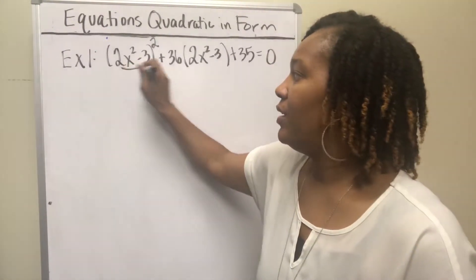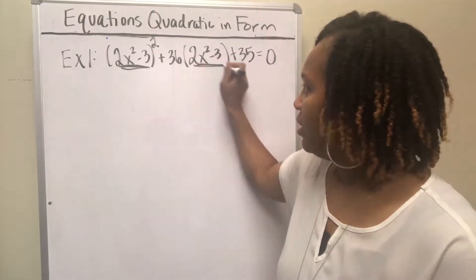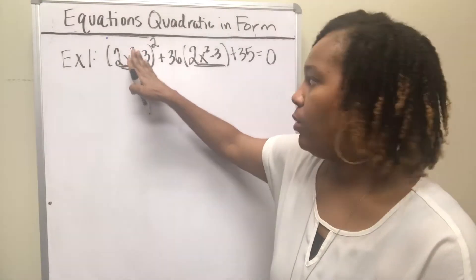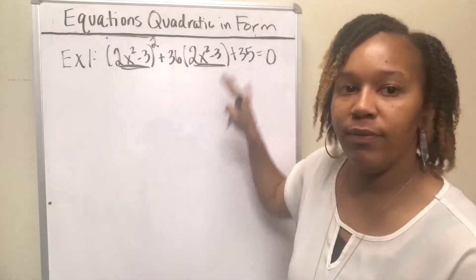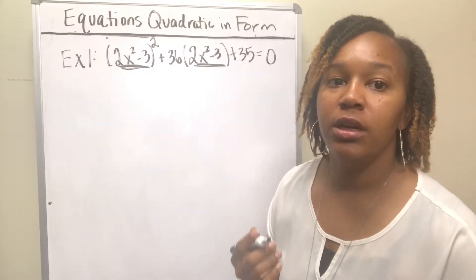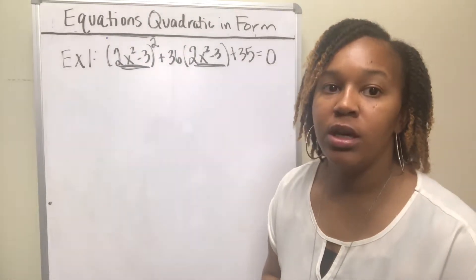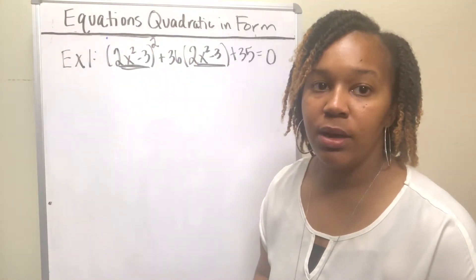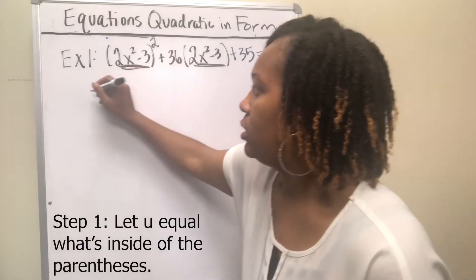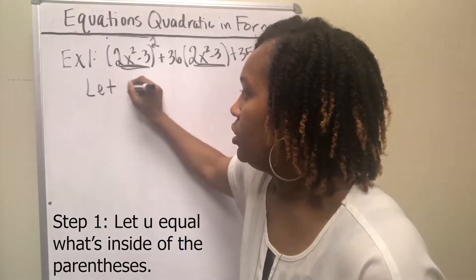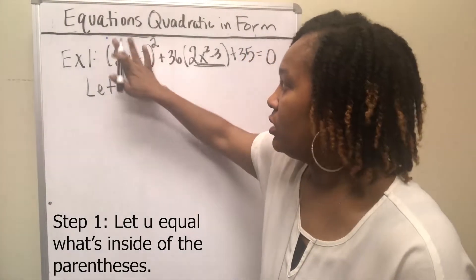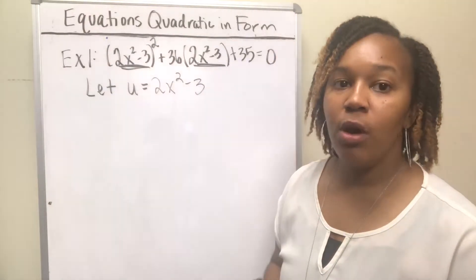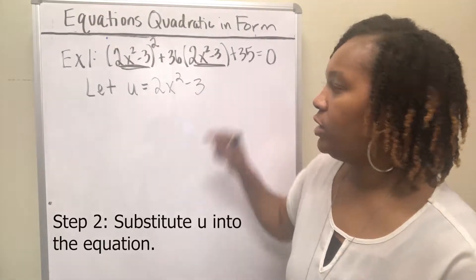It has this additional stuff — I will call this additional — where usually we're used to seeing only one variable raised to a number, plus a number times that one variable, plus a number equal to zero. That's the general form of a quadratic equation. So anytime you have an equation that looks like this, you can make it into a quadratic equation by letting u equal this additional stuff. The first step is you let u equal the additional stuff, the 2x² − 3. And then you go back and substitute u in for each of those.